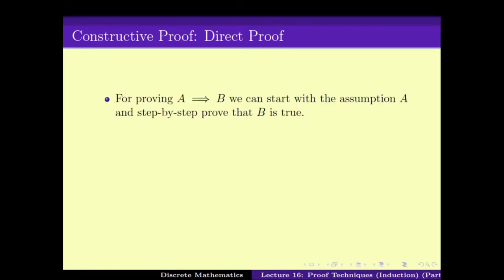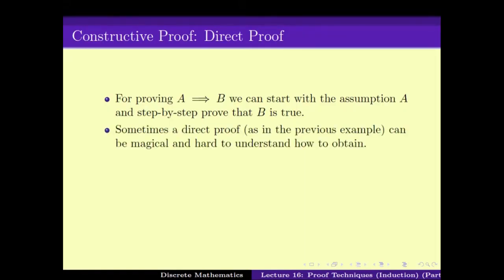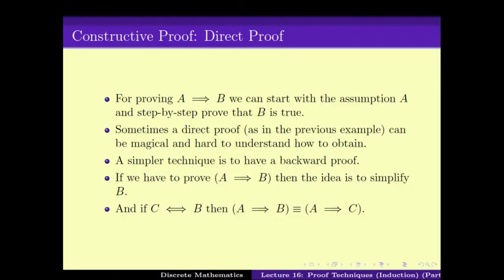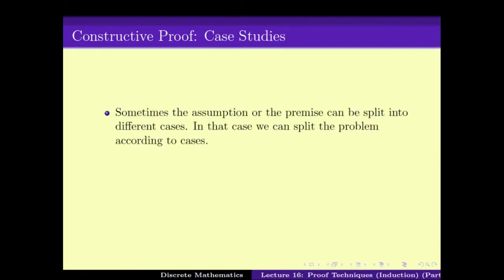We also looked at some proof techniques — namely the direct proof technique, where you work with A and prove B. Sometimes we go in a backward direction, where we work with B and simplify to get something C, so that proving A implies C is easier than proving A implies B.